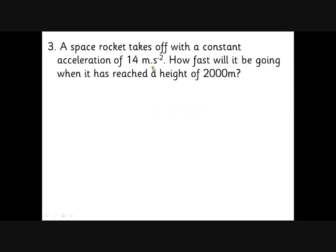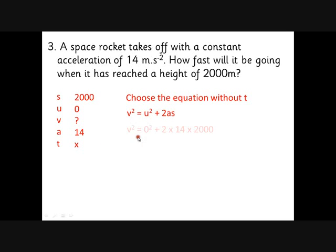Again, a space rocket takes off with an acceleration of 14 metres per second squared. How fast will it be going when it's got a height of 2,000 metres? So the distance it's travelled is 2,000 metres. Starts from zero, we'd like to know how fast it's going, we know the acceleration, we don't know how long that's taken to get there. So we want the one without T in it. Just plug all the numbers in. Don't forget to take the square root. It's going 237 metres per second.